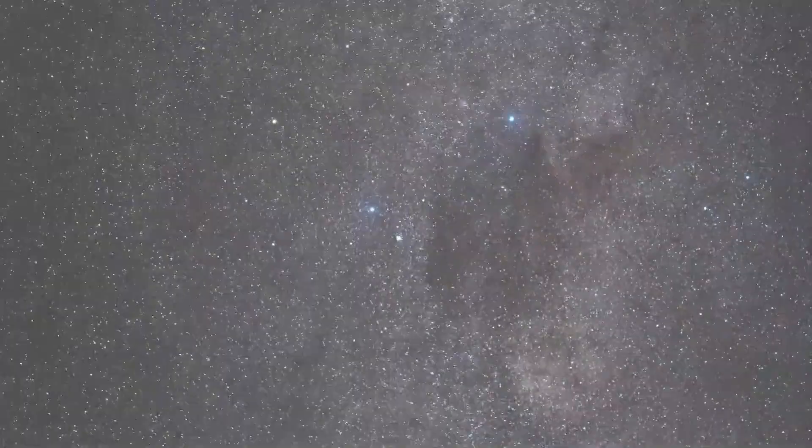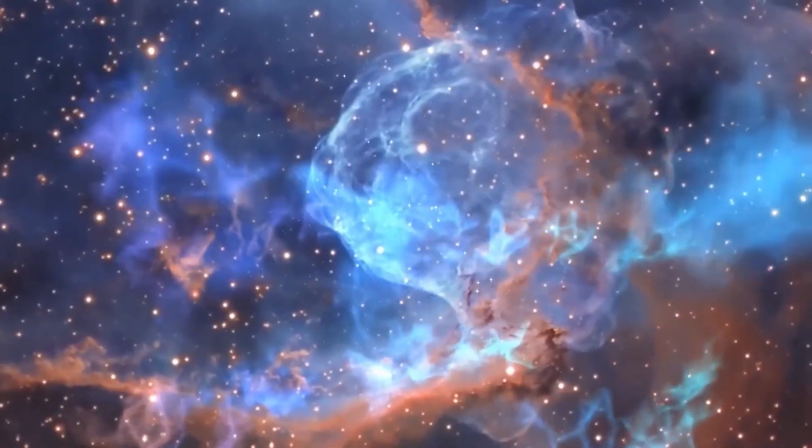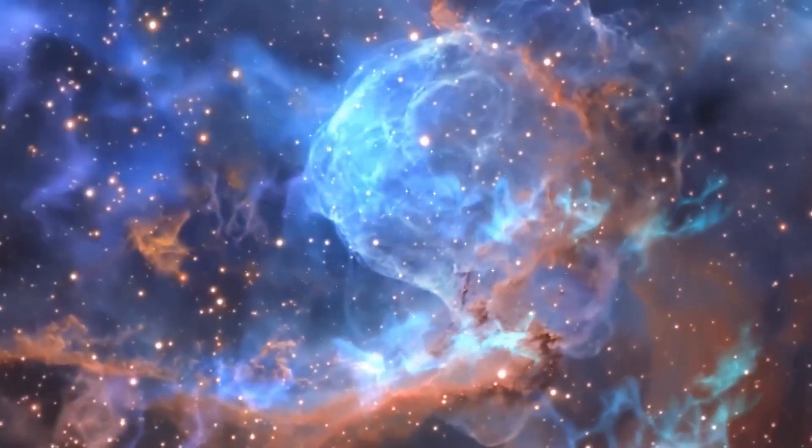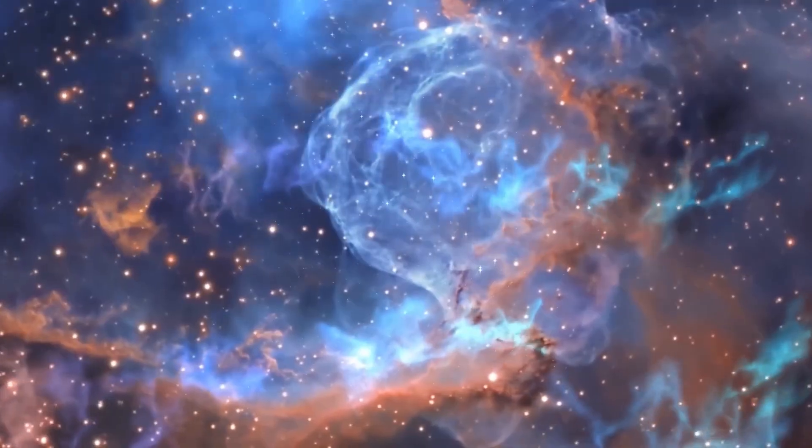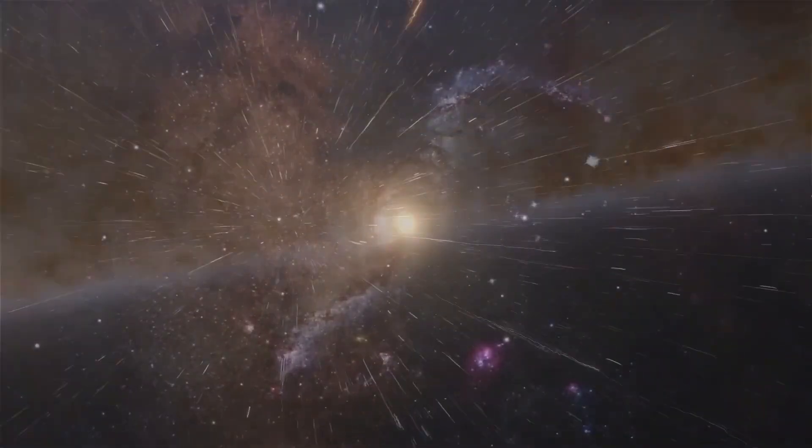Imagine looking at a photograph of the night sky, but this isn't just any snapshot. The James Webb Space Telescope, floating a million miles from Earth, captures light that's been traveling for billions of years. It's like a time machine showing us galaxies as they were when the universe was just a toddler.